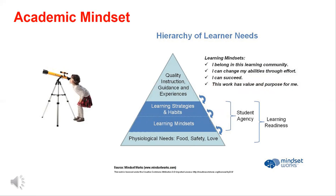If you look at the bottom of the pyramid, you see the physiological needs: food, safety, and love. Many of our students with complex bodies have difficulty eating, drinking, and sleeping. When they come to school, many are very tired, dehydrated, and hungry. Until those needs are taken care of, they're not going to be in a place where they can learn. The same is true for safety — if students do not feel physically and emotionally safe in your classroom, learning cannot happen. The love aspect means making them feel valued and wanting to interact with them.